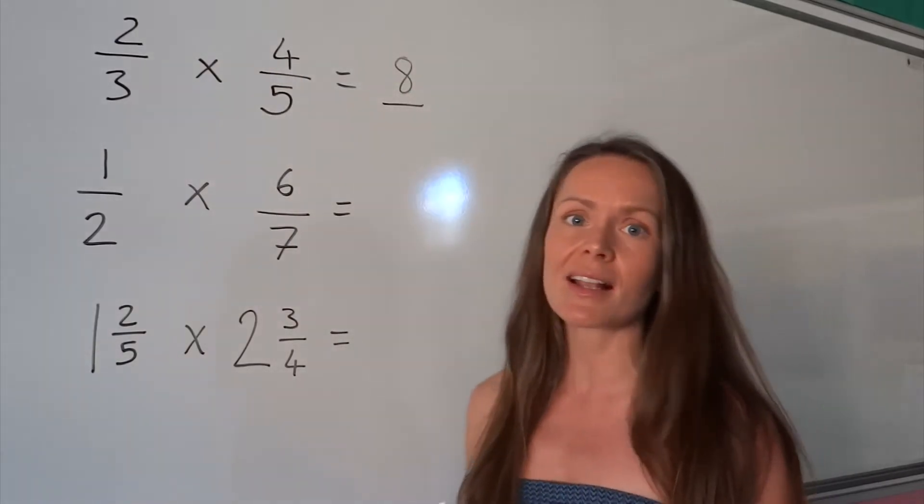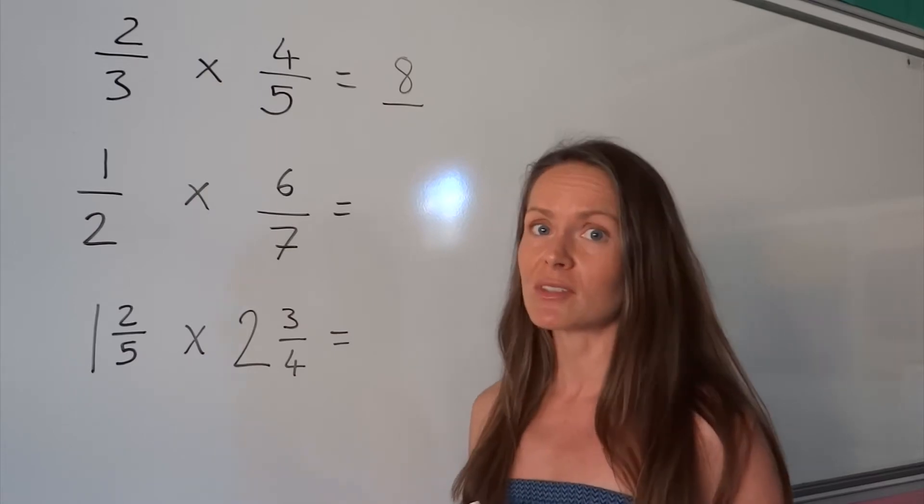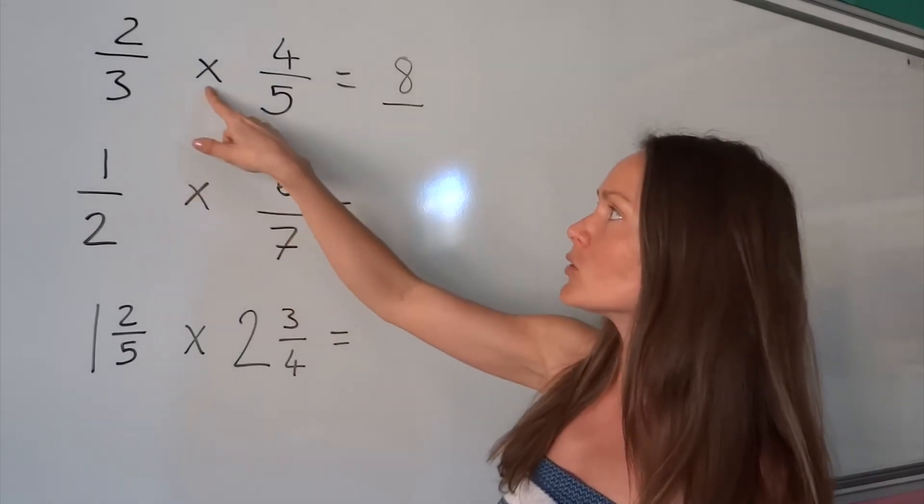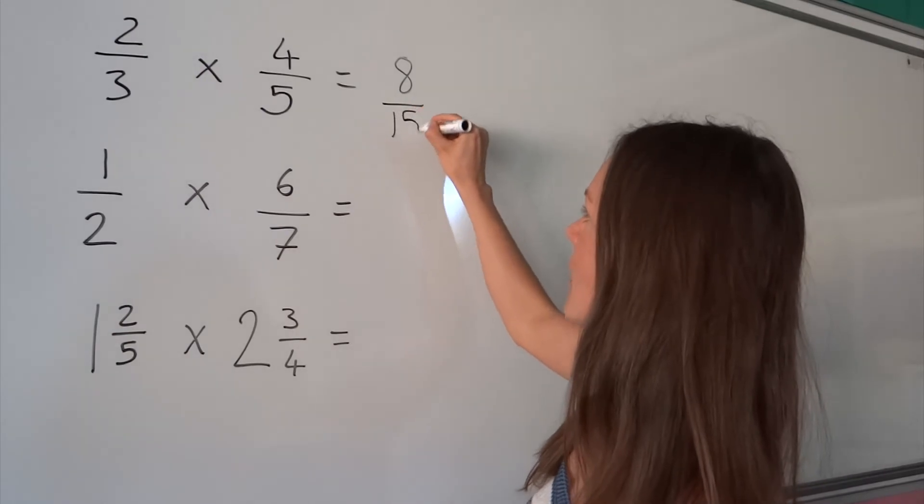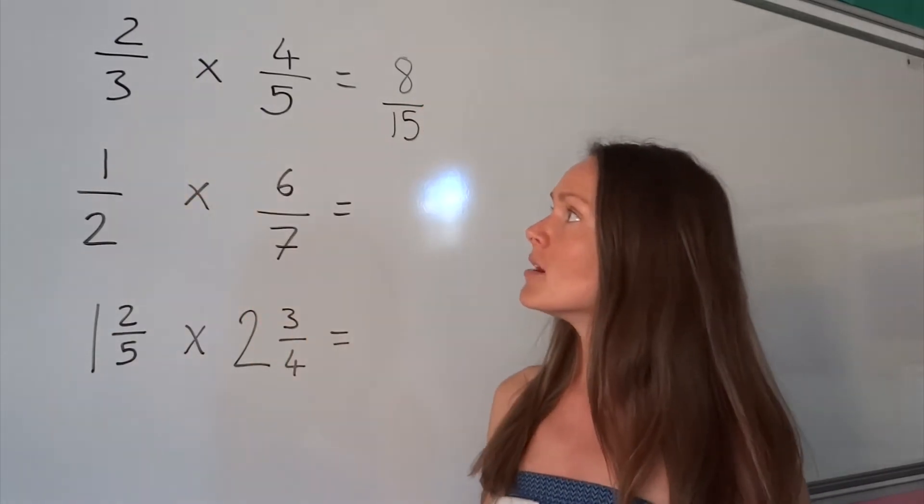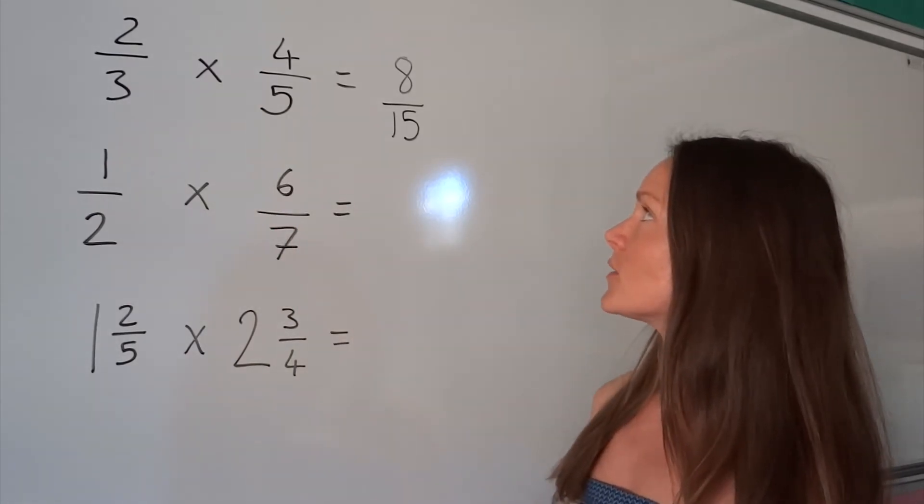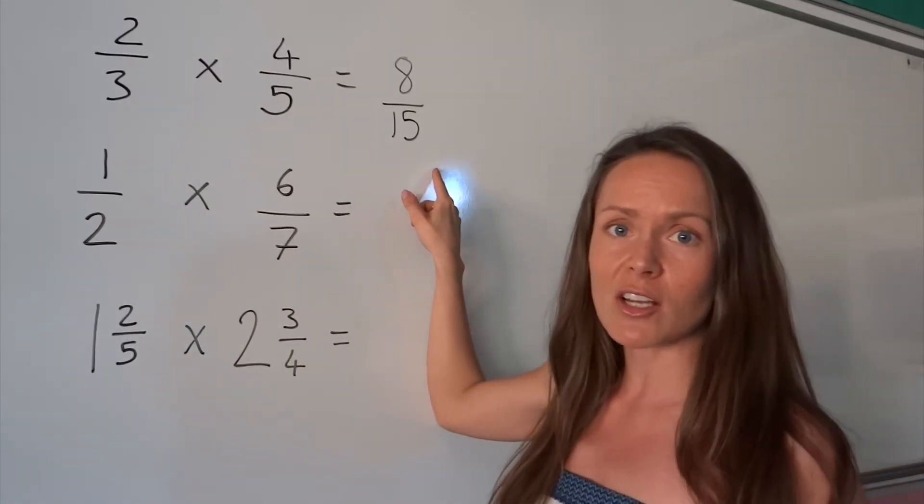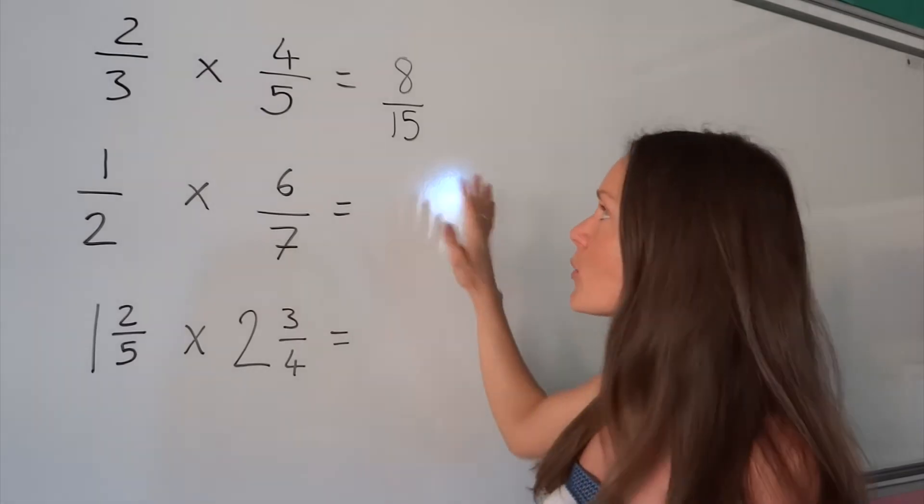And then I'm going to do exactly the same thing with the bottom two numbers, the denominators. 3 multiplied by 5 is 15. And there we go, we've already multiplied our first fractions together, 2 thirds by 4 fifths. We can't simplify this fraction. There's no common factor, so we just leave it like that.